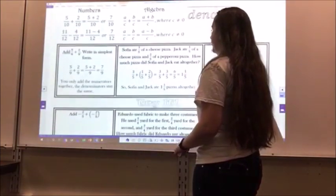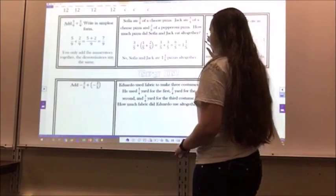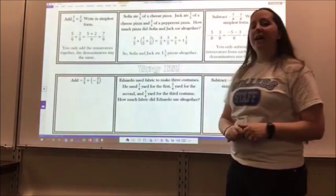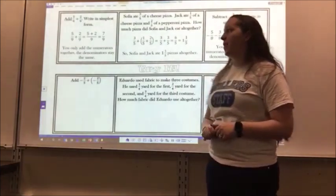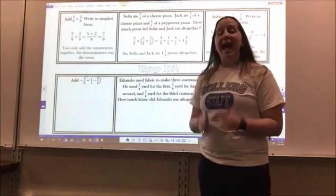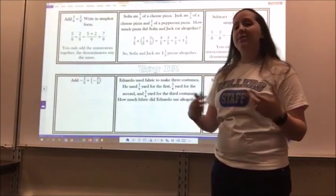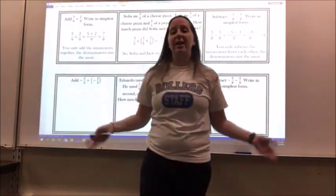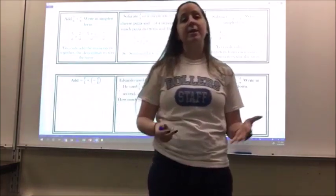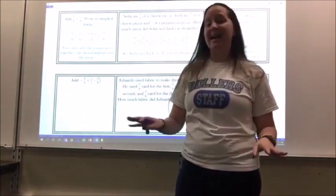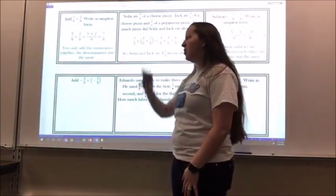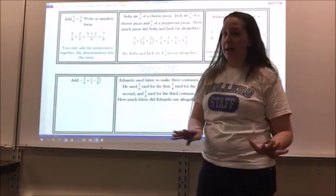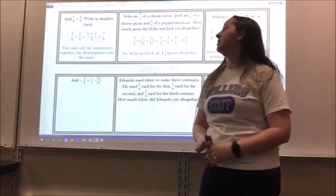So let's take a look at a couple of examples. It says add 5 ninths plus 2 ninths, write in simplest form. So all I do is I add the numerators together. 5 plus 2 is 7, 7 ninths. I cannot do anything else with that. It is already in simplest form, so that is my answer. You can only add the numerators together. The denominators stay the same.